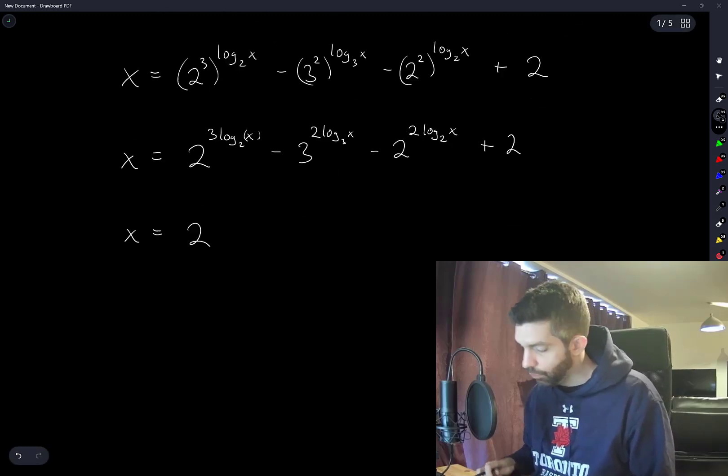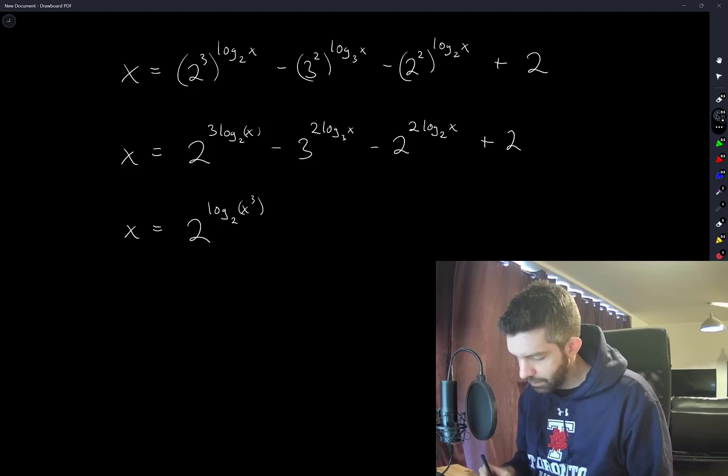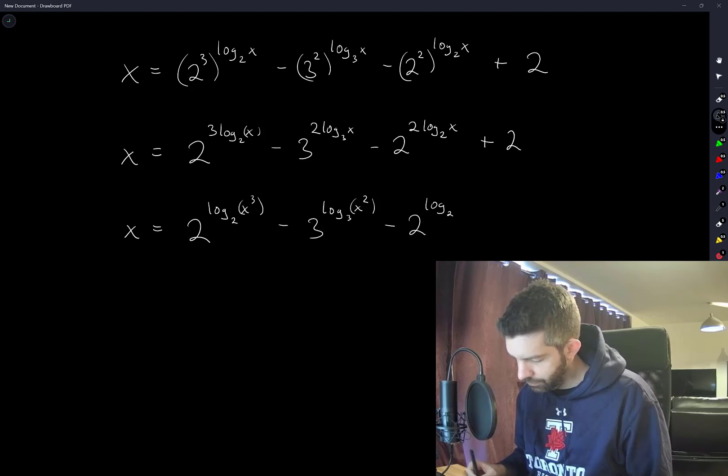We'll use a rule of logarithms now. This is log base 2 of x³. So that's where my cubic equation for x is going to come from. Here we have 3 to the log base 3 of x² minus 2 to the log base 2 of x² plus 2.